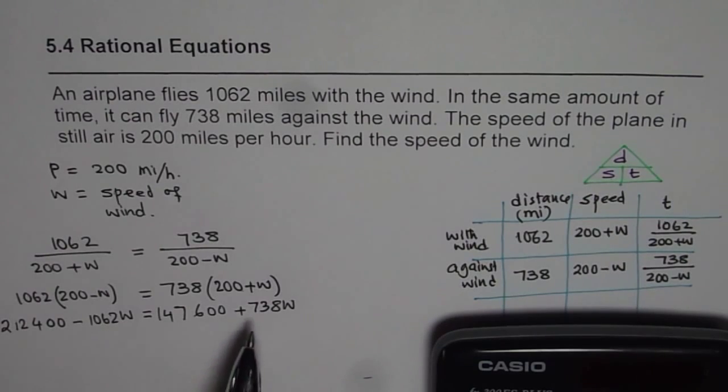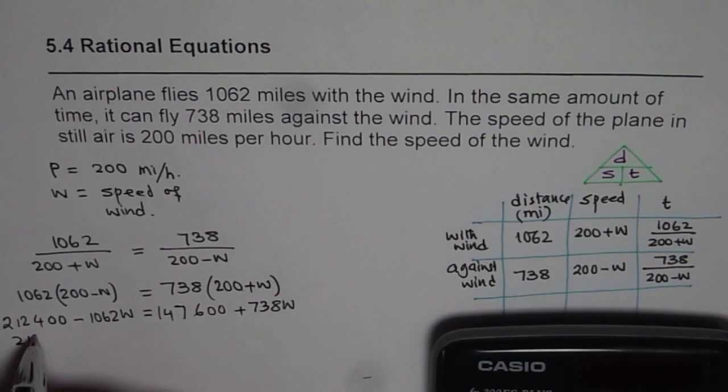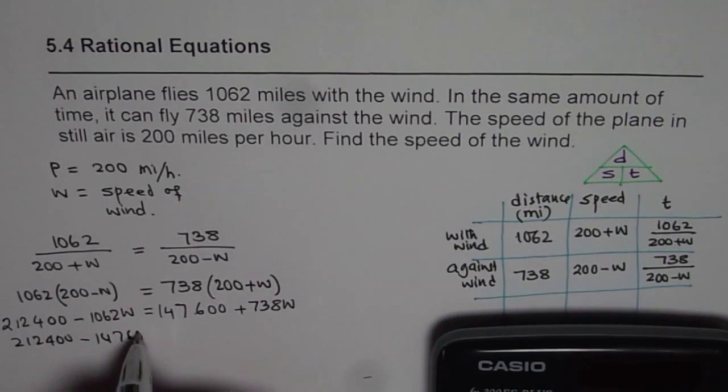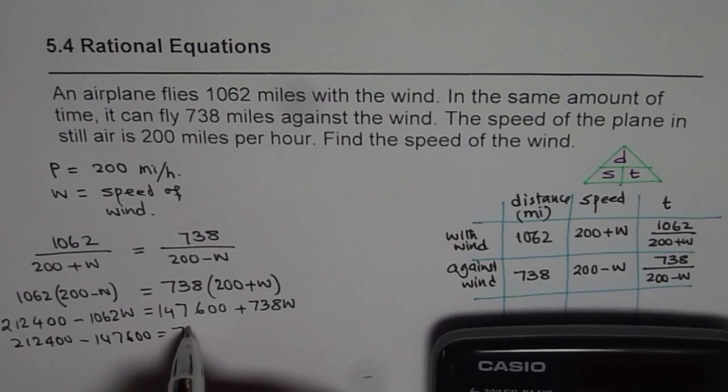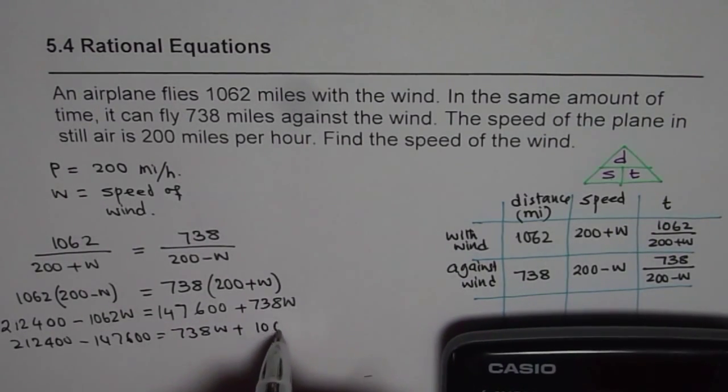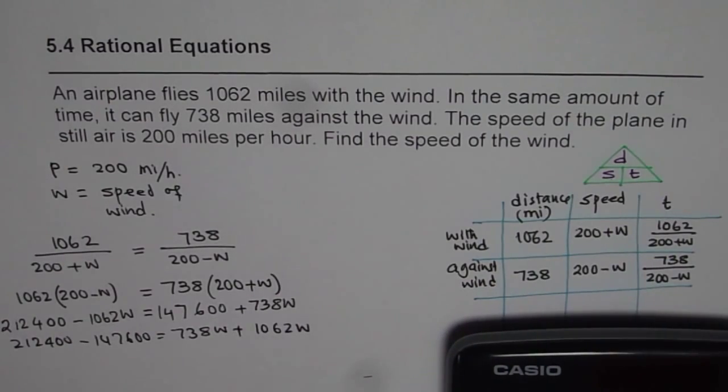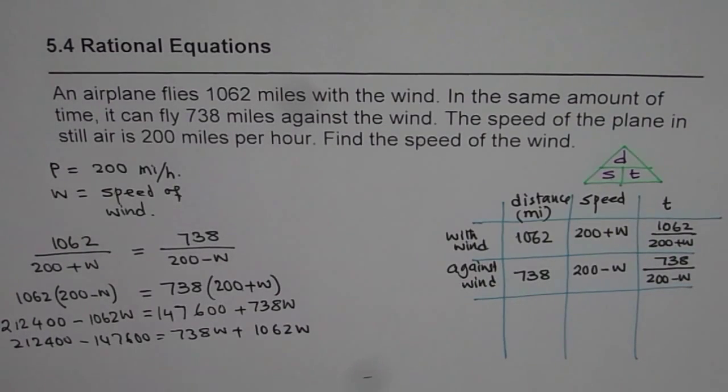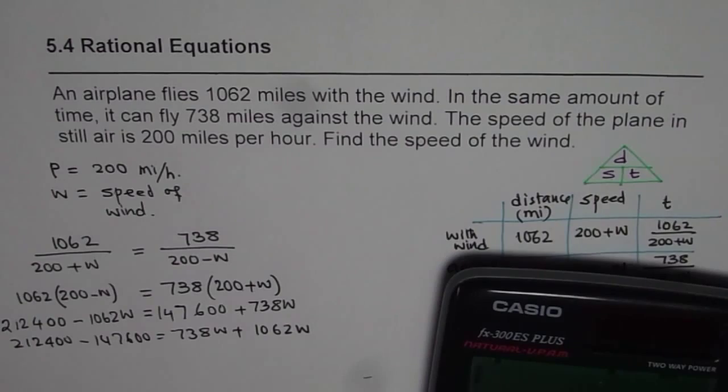So let us organize it. Put variables on one side and the constants on the other side. So we get 212,400 take away 147,600 equals to 738w plus 1062w. Now we can combine the terms.